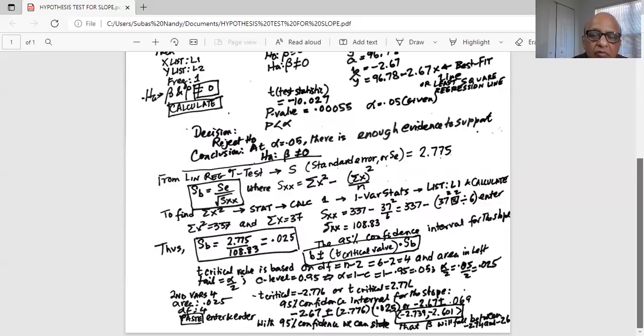Now to get the lower bound, we'll subtract. So minus 2.67 minus 0.069, which is minus 2.739. And to get the upper value or upper boundary of the confidence interval, we will do minus 2.67 plus 0.069, which is minus 2.601. So with 95% confidence, we can state that the population slope will fall between minus 2.74 and minus 2.6.